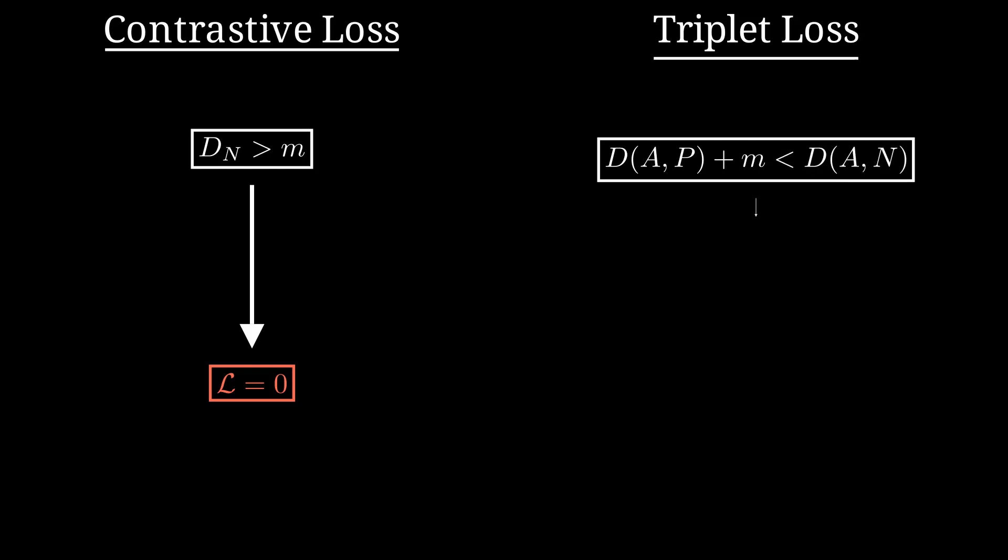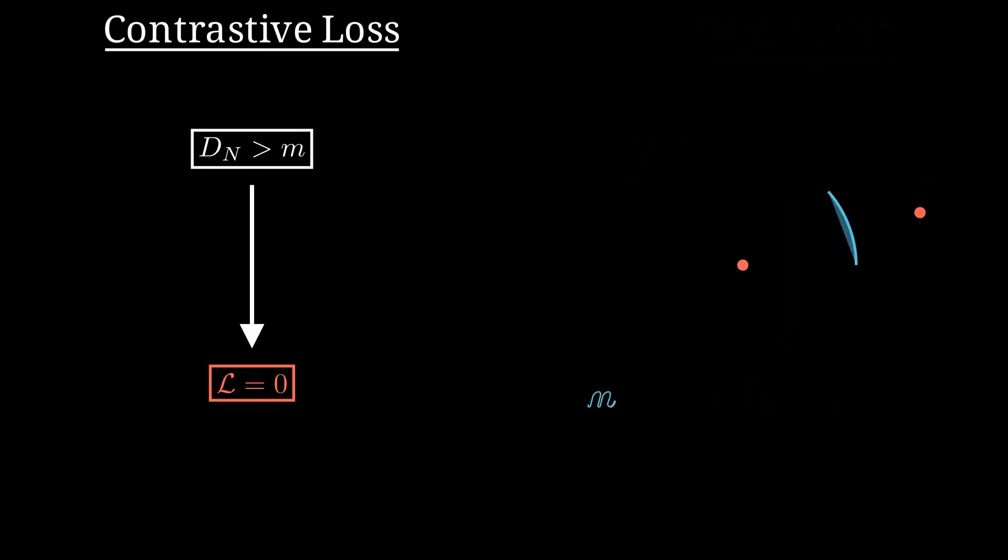For both contrastive loss and triplet loss, there are situations where the loss is zero and therefore doesn't provide a meaningful signal for training the network. Take the contrastive loss for example.